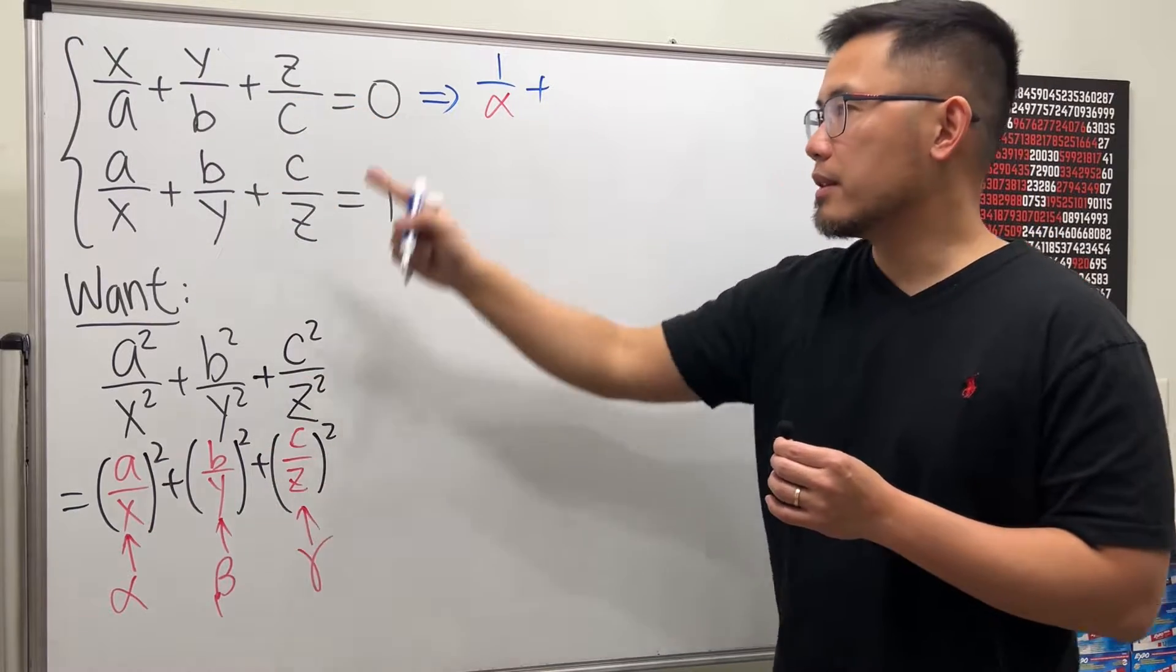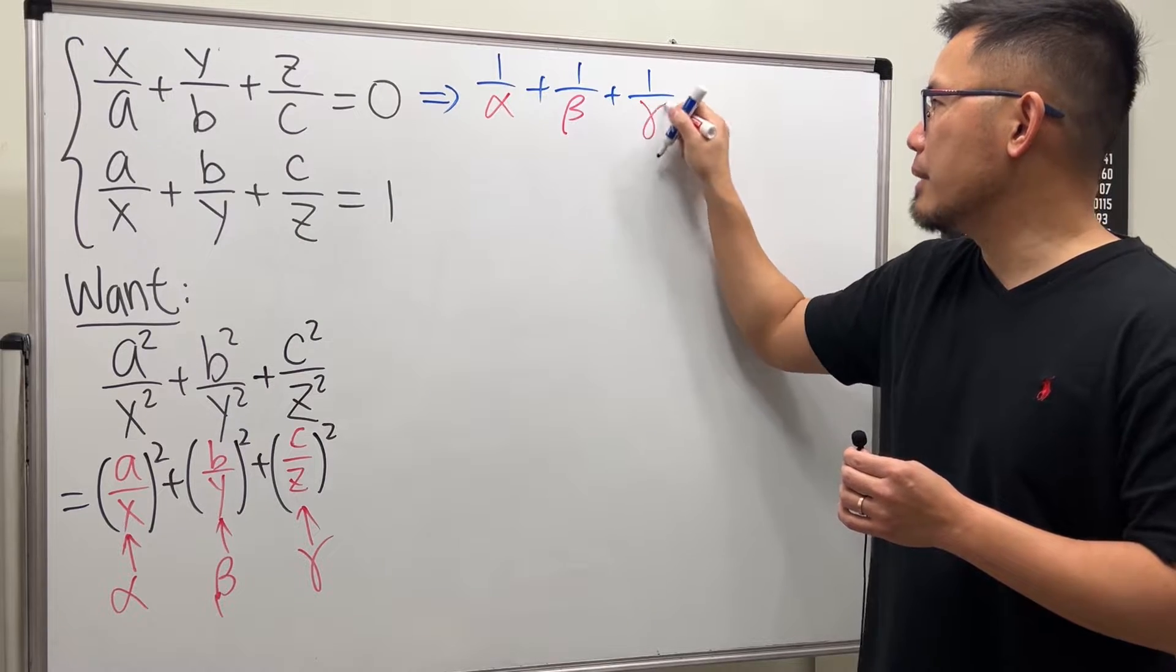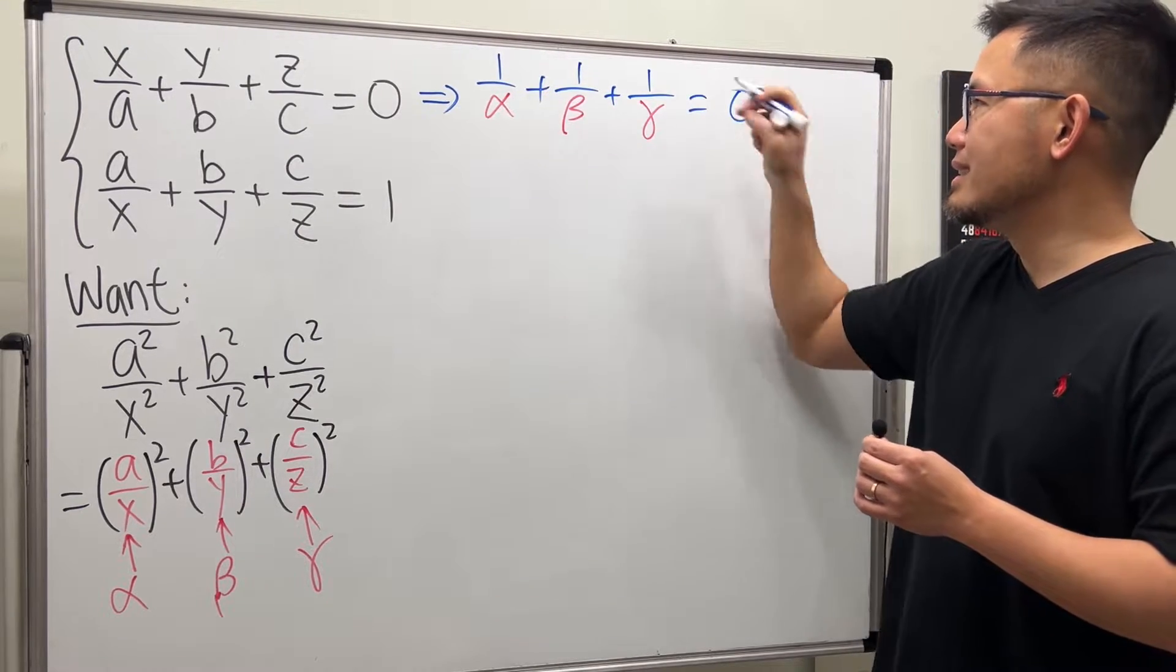and then do the same thing. The next term will be 1 over beta, and then lastly, 1 over gamma. That will be equal to 0.